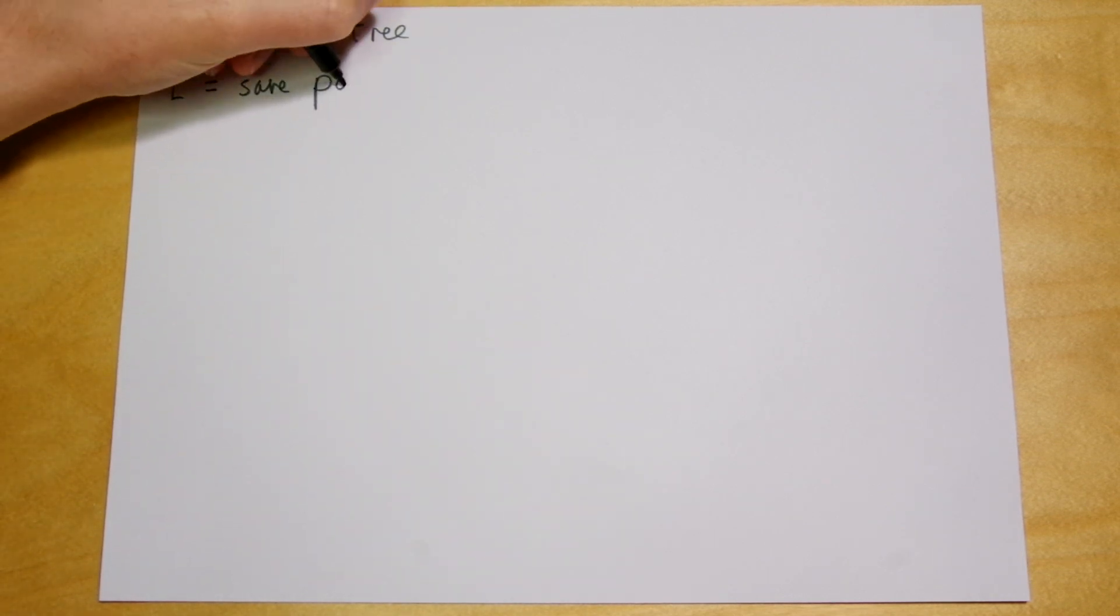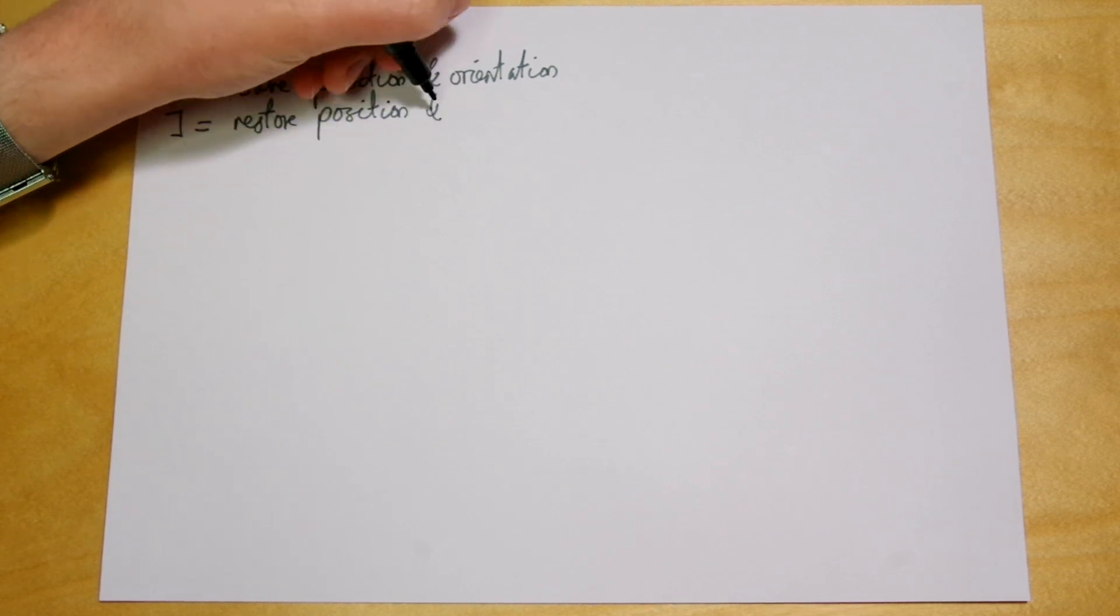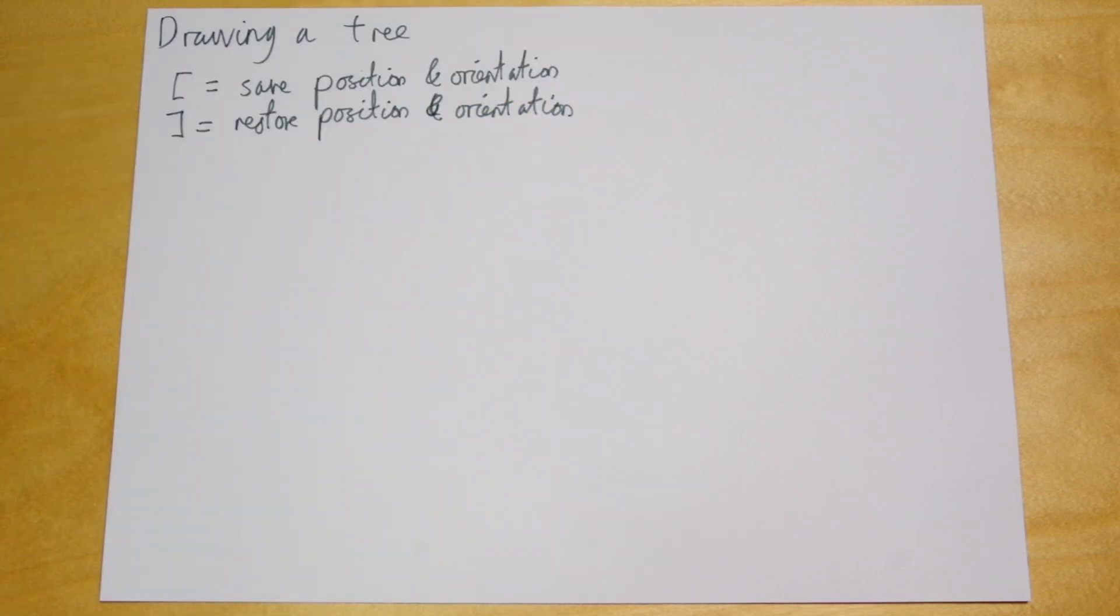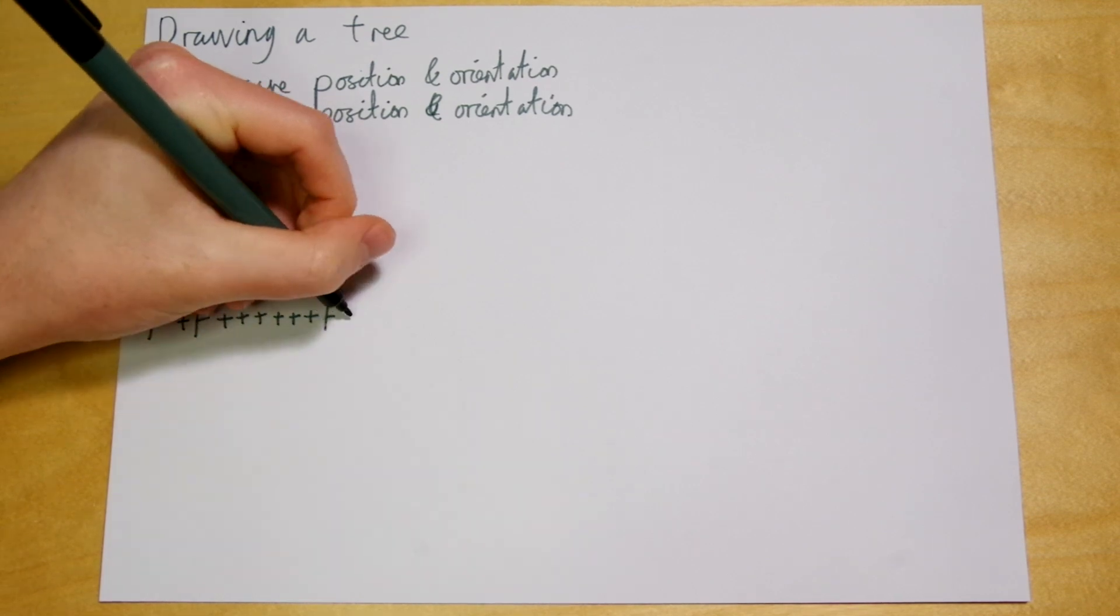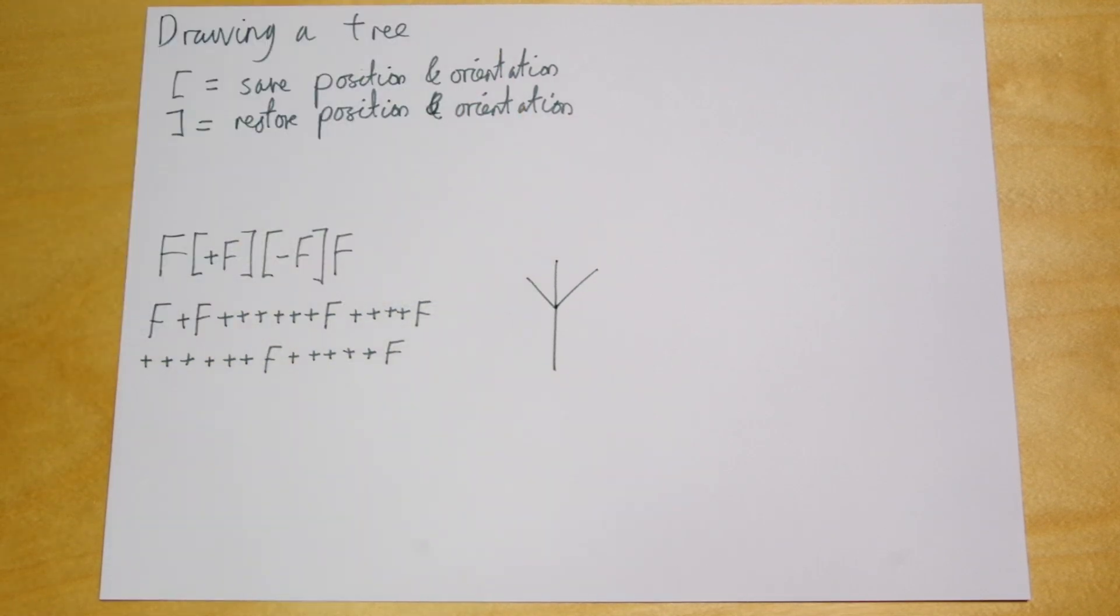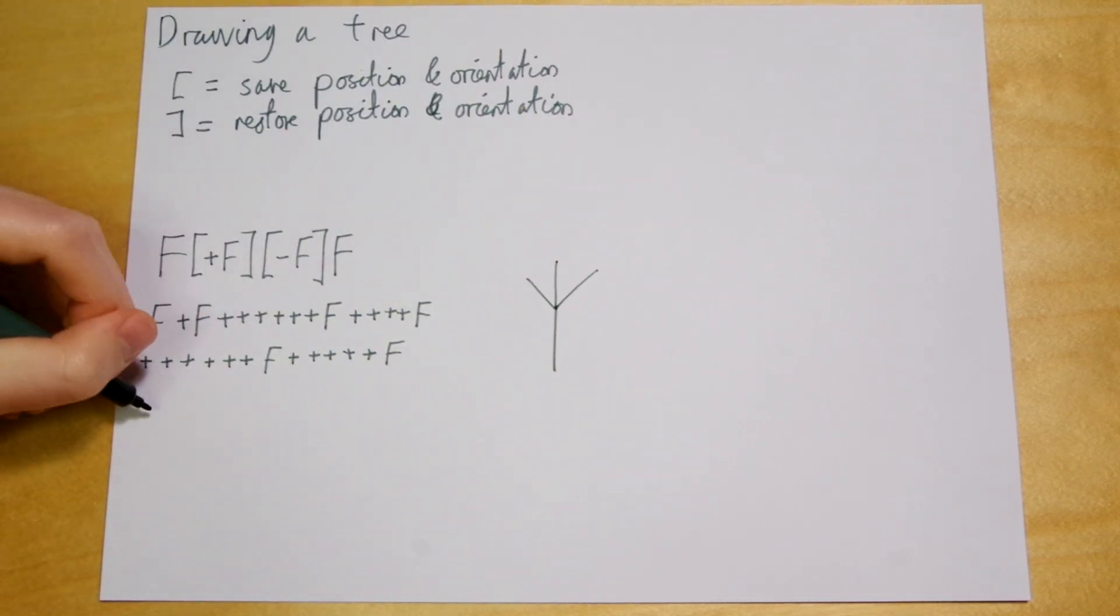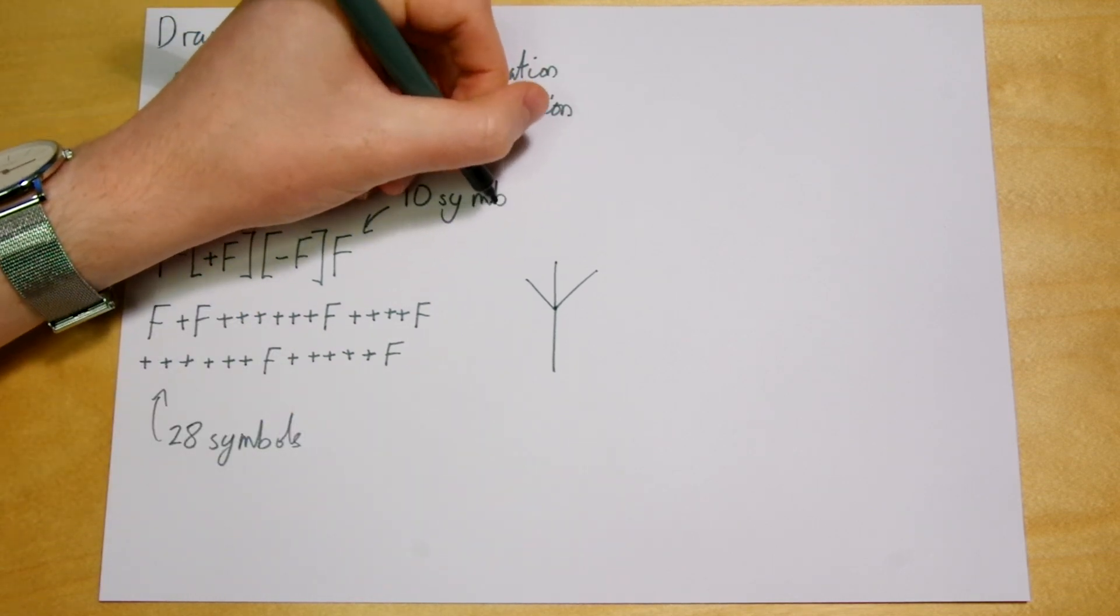But before we get started, there are two more symbols that we'll find very useful. They're brackets. When drawing, a left bracket means to add the current position and direction the pen is pointing in to the end of a list. And a right bracket means to take the last entry off that list, and return to the position and direction it says. This makes it really easy to draw branches. I've just written out two ways of drawing this little fork-like shape. With the brackets, it's just 10 symbols. But without them, we need to write instructions to draw each branch in reverse, so the other branches can start in the right place. And that takes 28 symbols in all.